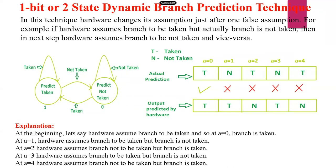Initially, I predict that the branch is a taken branch, but actually the branch is not taken — so that is wrong. Then obviously in the next case, my prediction changes: instead of taken branch, my prediction is not taken. In case the actual branch is taken, again that is false. False means the state will be changed. This is the way to predict using the dynamic branch prediction technique.